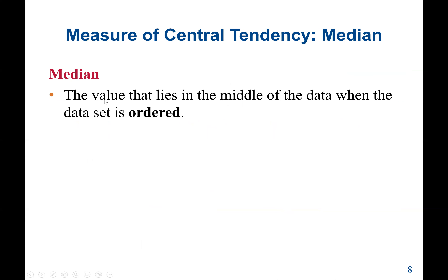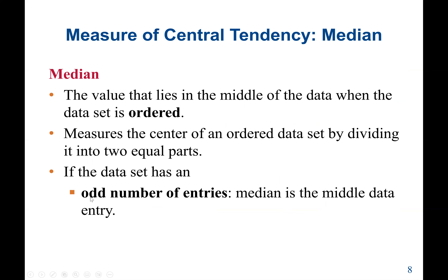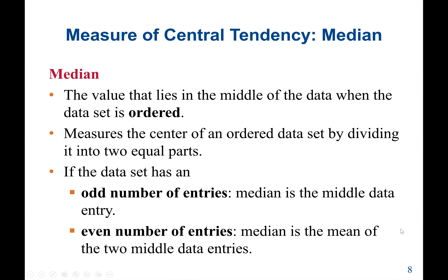Next is the median. The median is the value that lies in the middle of the data when the data set is sorted in ascending order. It measures the center of an ordered data set by dividing it into two equal parts. If the data set has an odd number of entries, the median will be the middle data entry. For example, if the data set has 7 entries, the median will be the fourth value.